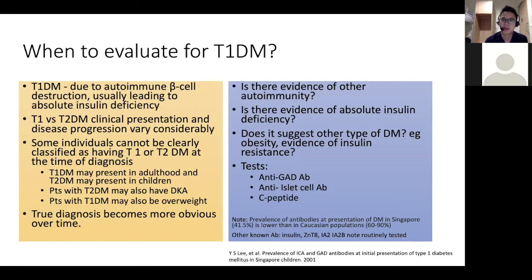If we are suspecting type 1 DM, we send off the antibodies — GAD antibodies and islet cell antibodies — and also assess a random C-peptide. Of note, Prof Leon Singh did a study on the prevalence of GAD and ICA antibodies at initial presentation of type 1 DM in Singaporean children. The prevalence of antibodies is actually quite low compared to the Caucasian population — only about 41.5%. So even if antibodies are negative, it doesn't exclude type 1, although a positive result is very helpful.